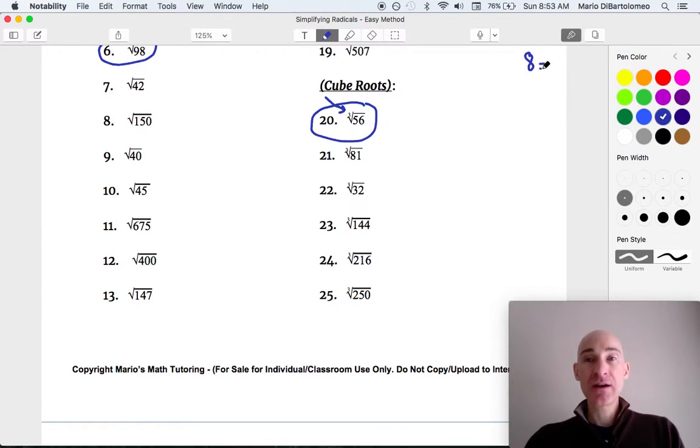Those are numbers like 8, because that's 2 cubed. Let's write that down, 2 cubed. And let's see, what else do we have? We've got 27, that's 3 cubed. We've got 64, that's 4 cubed, and so on.